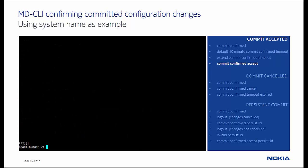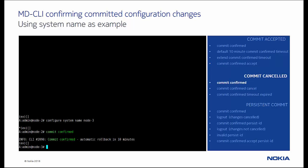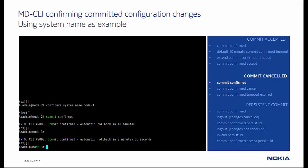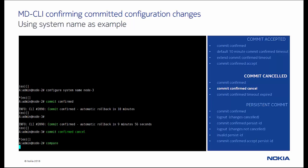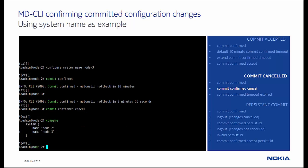In the next example we change the system name from node 2 to node 3, and commit the changes using again the commit confirmed command. We observe the successful activation via the new system name, node 3. But we use the commit confirmed cancel command to undo these changes, and see in the prompt and with the compare command the previous uncommitted changes.